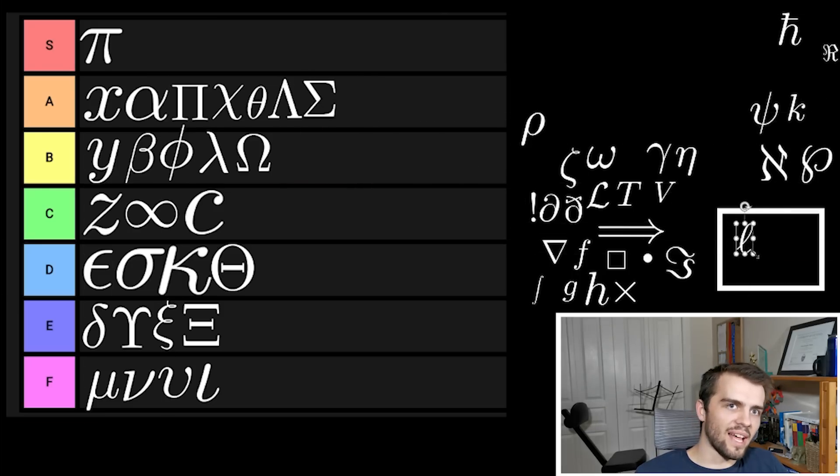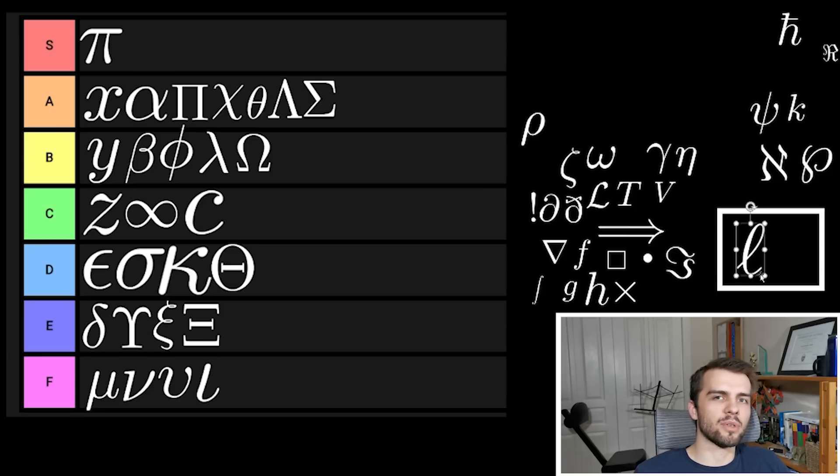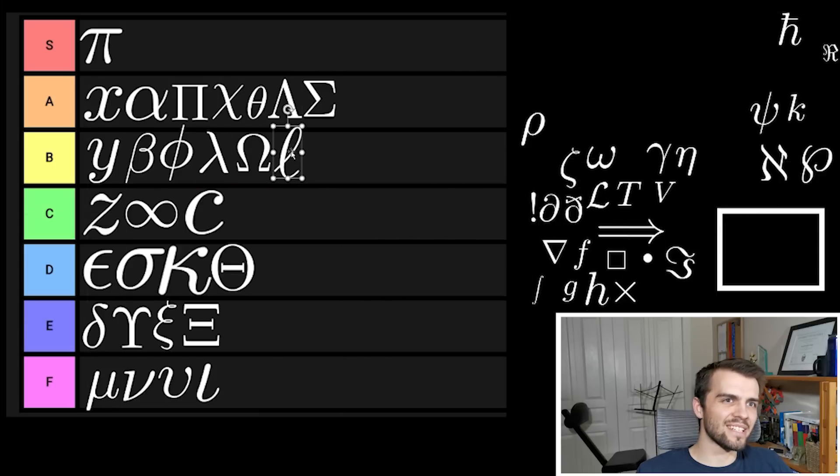Now I actually love little L. This is slash L in LaTeX and it's different than L and it's just beautiful. L shows up all the time in quantum mechanics for angular momentum. It's nice having this as opposed to just a regular L. This is a good symbol. I'm going to put it B tier.